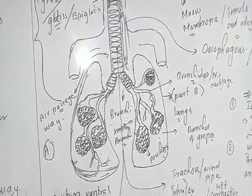The trachea also consists of cilia — hair-like structures — which filter dust particles and bacteria from the incoming air. Additionally, the trachea is lined with a mucous membrane which secretes mucus, a sticky substance that traps bacteria and germs. So by the time air passes through the trachea, it is completely clean air that reaches the lungs.